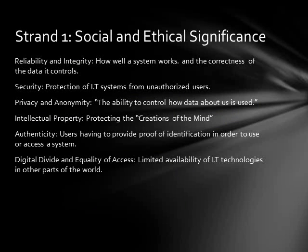First, we'll talk about strand one, the social and ethical significance. There are a set of pre-named social and ethical issues used to describe what might be wrong with the usage of a particular IT system. Many of them can apply to one specific situation, but there's usually one main one that relates to each different system. The first is reliability and integrity — this analyzes how well a system works and the correctness of what it controls. It's a go-to issue because a system is never going to be perfect. IT systems always have some kind of flaw, so reliability, if all else fails, is usually applicable.